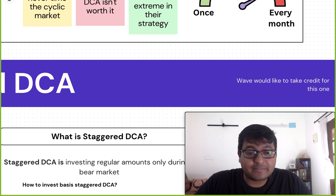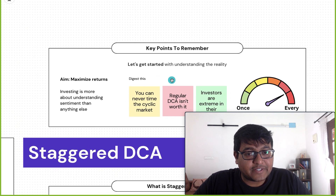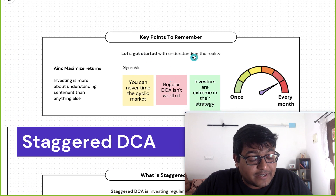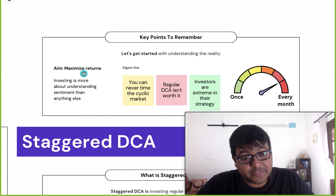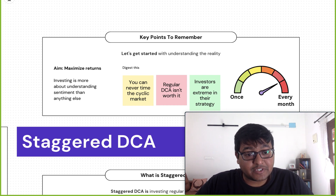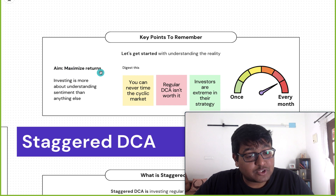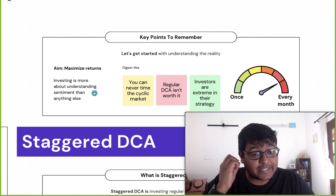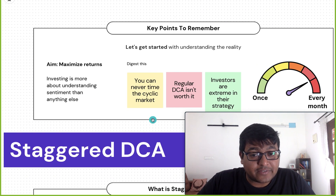I'm calling it staggered DCA because it's a little different — it's DCA, but you're going to stagger it. Before that, let's understand some ground reality. The aim here is to maximize returns. If you look at MicroStrategy, they have maximized their returns — compared to the market today, they're probably at 50% or more higher. But can we do more? Yes, we can. Investing is more about understanding the sentiment than anything else — that's the first thing you need to keep in mind.